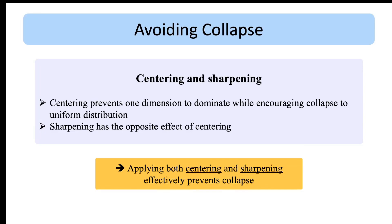In self-supervised settings involving two simultaneously trained networks, mode collapse is always a concern. In DINO, the authors use centering and sharpening operations, which have opposite effects on each other. The combination of these two effectively prevents mode collapse.